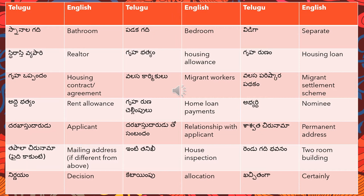'Keta impu' means allocation — how much money has been allocated for a particular thing. 'Kachitanga' means certainly.